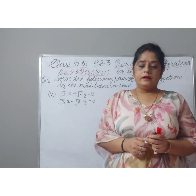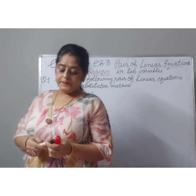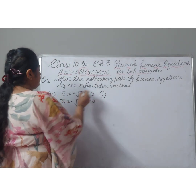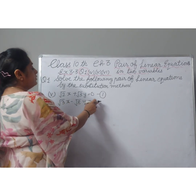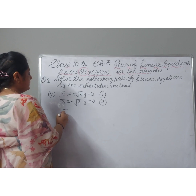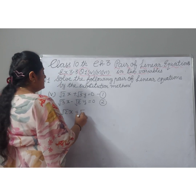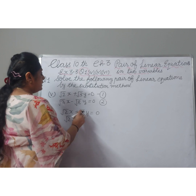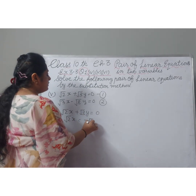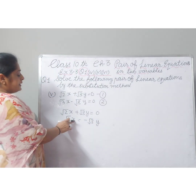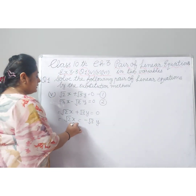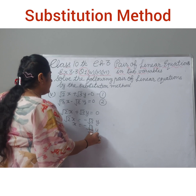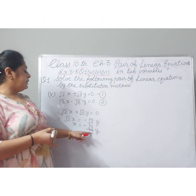Now I will explain the next part — question number 1, fifth part. The equations are: root 2x plus root 3y equal to 0 (equation 1), and root 3x minus root 8y equal to 0 (equation 2). Taking equation 1, we isolate x: root 3y moves to the right side as minus root 3y, and dividing by root 2 gives x equal to minus root 3 divided by root 2 times y.